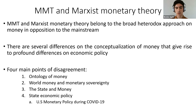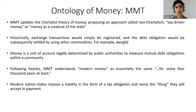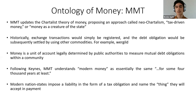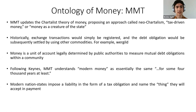On the ontology of money: MMT is also called neo-chartalism because they update the chartalist theory of money originally proposed by Knapp and Innes more than a century ago. They also bring insights from Keynes, Minsky, Abba Lerner and other authors, arriving at this neo-chartalist theory also called tax-driven money, or money as a creature of the state — though I think it would be more appropriate to call it money as a creature of the law.